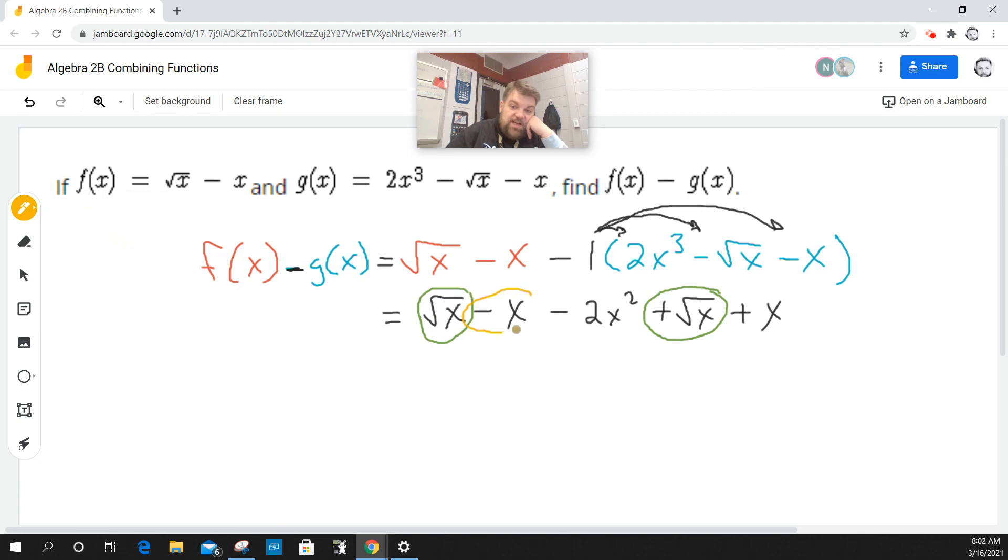Then I have a negative x to the first power, and a positive x to the first power. And then lastly, I've got negative 2x squared. I want to write this in descending order. Oh, why did I say squared? Because technically that's cubed, right? First thing in the morning, am I right?